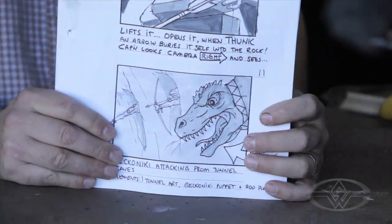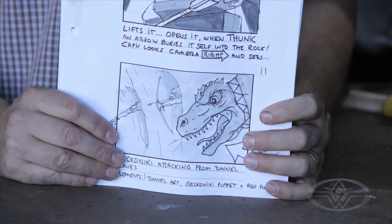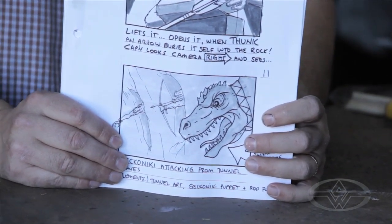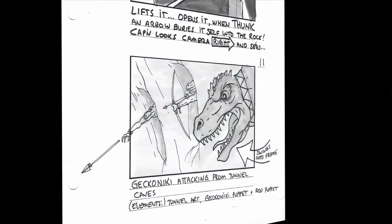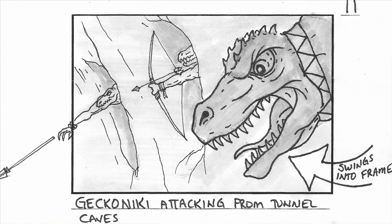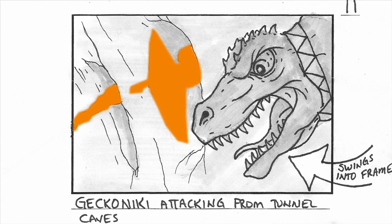The storyboard shows a sequence of caves with Gekkaniki's launching arrows and spears at our protagonist. What I find useful is to think of these pieces, or elements, as layers. So let's separate them from the back to the front. Okay? So now, let's get rid of the cave.